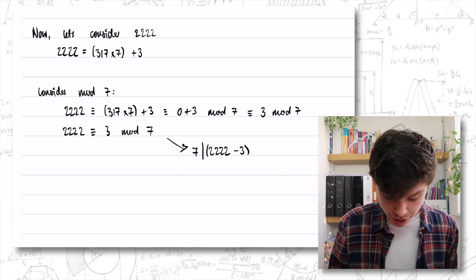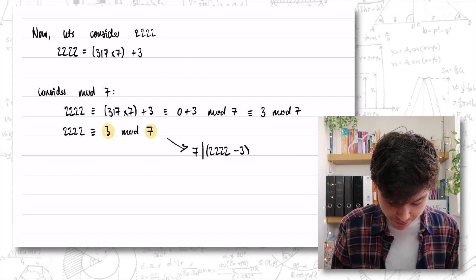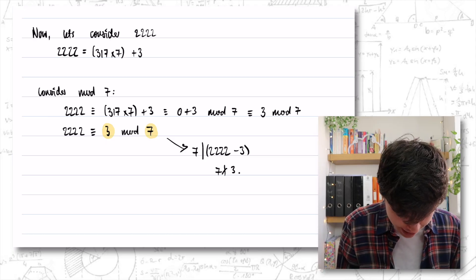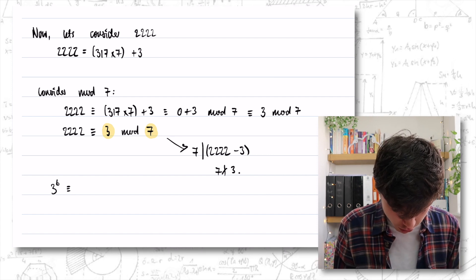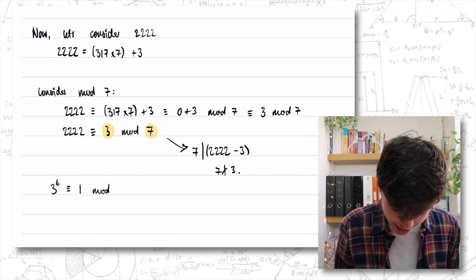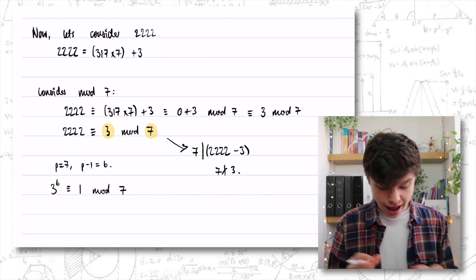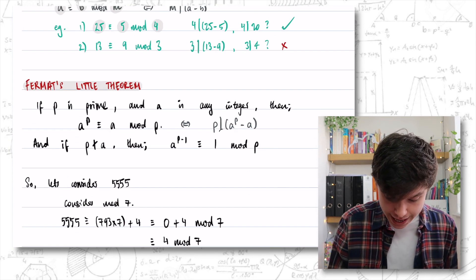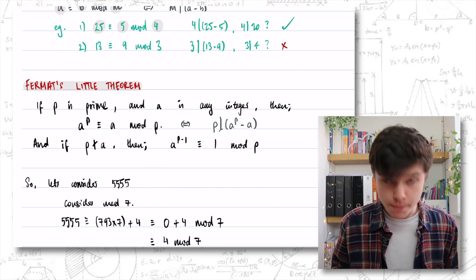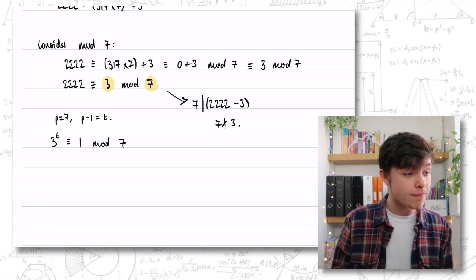Now notice that 3 and 7 are what you call co-prime — it's the condition for Fermat's Little Theorem. 7 does not divide 3, so we can say 3 to the P minus 1, which is 3 to the 6, is congruent to 1 mod P, which is 7. Our A was 3. So we've got that information from Fermat's Little Theorem.